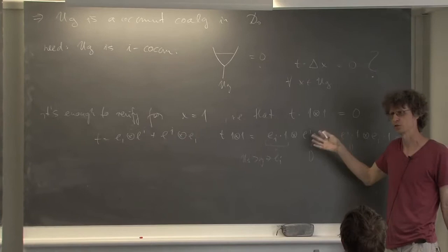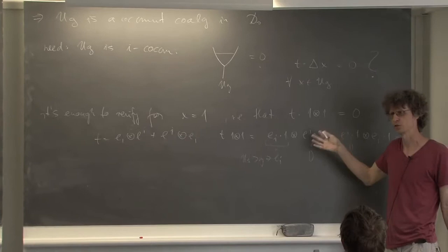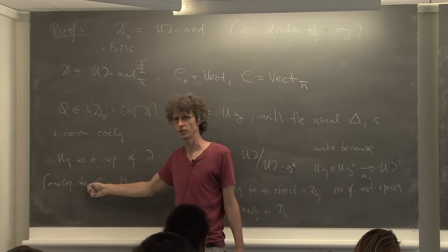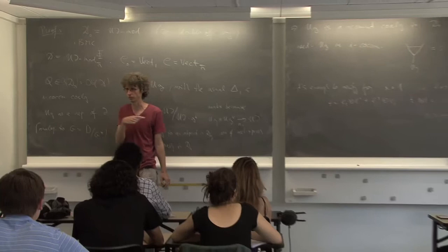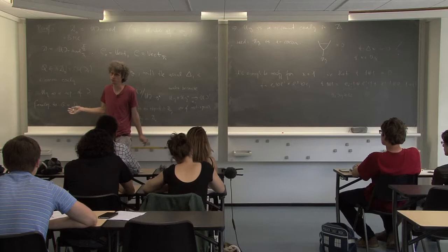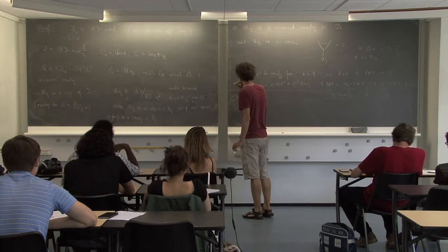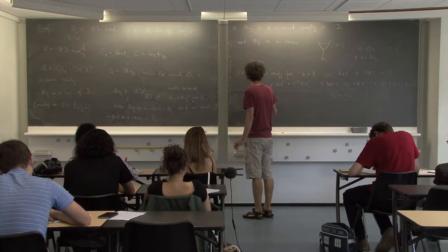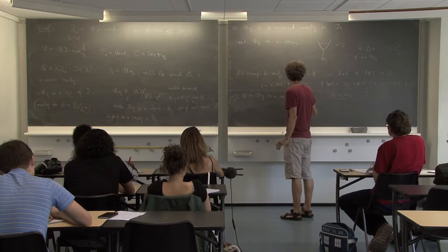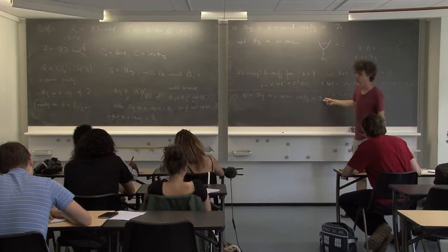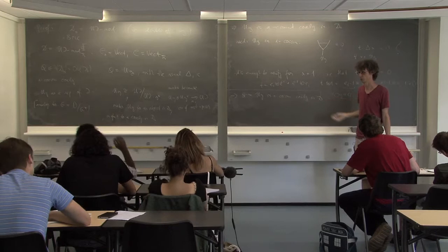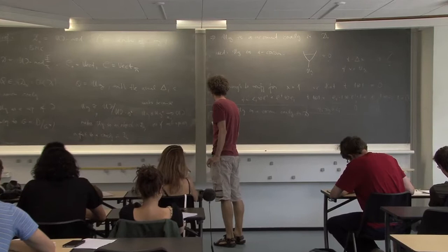Perfect — everything works. But this is just a version of something we already once verified: that the algebra of functions on G is I-commutative in the category of UD-modules. This is the same stuff, only now done for co-algebras more algebraically. So this certainly implies that Q equals UG is a co-commutative co-algebra in D, and when we apply the associator, infinitesimally co-commutative stays co-commutative.